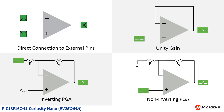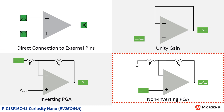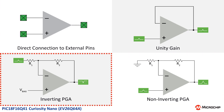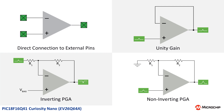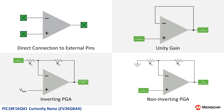From the top left going clockwise, the configurations are: direct connection to external pins, unity gain, non-inverting programmable gain amplifier, and inverting programmable gain amplifier. The only configuration that requires external parts to set the operating behavior is direct connection to external pins. All other configurations use the internal resistor ladder or unity gain switch. You can find out more about these configurations in the GitHub documentation or in the device datasheet.